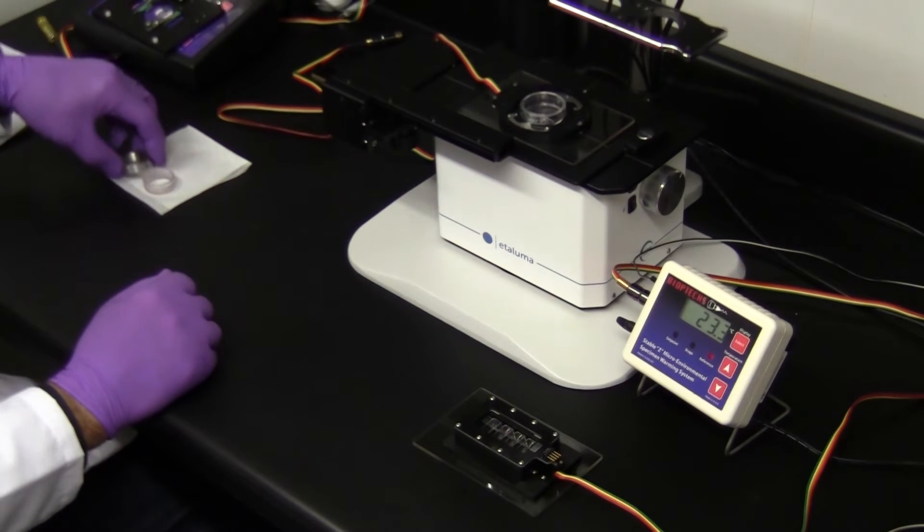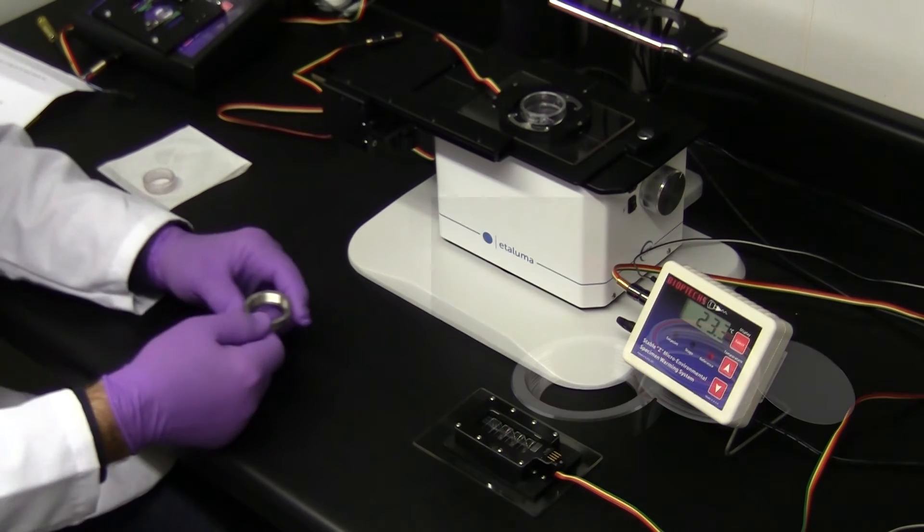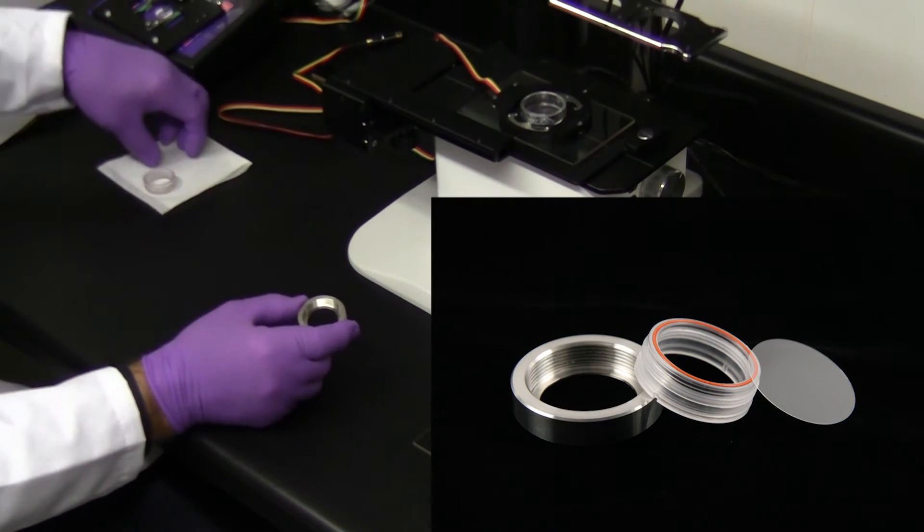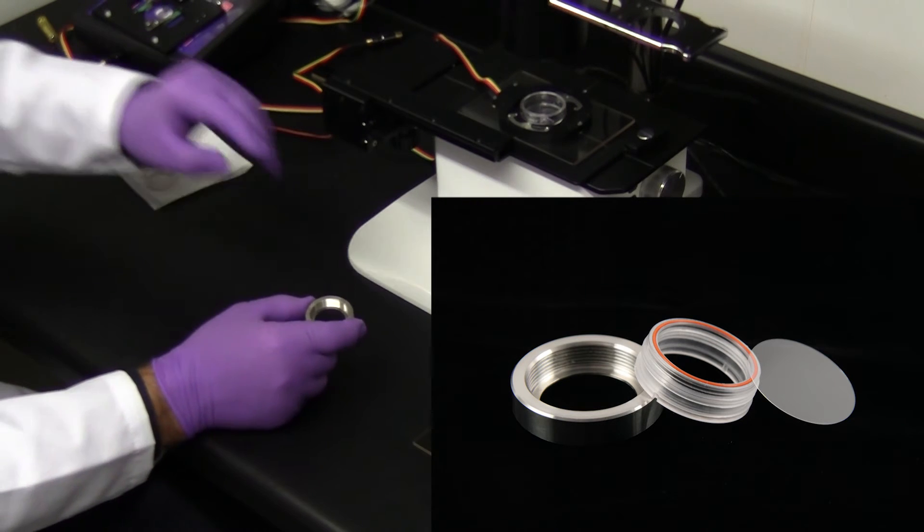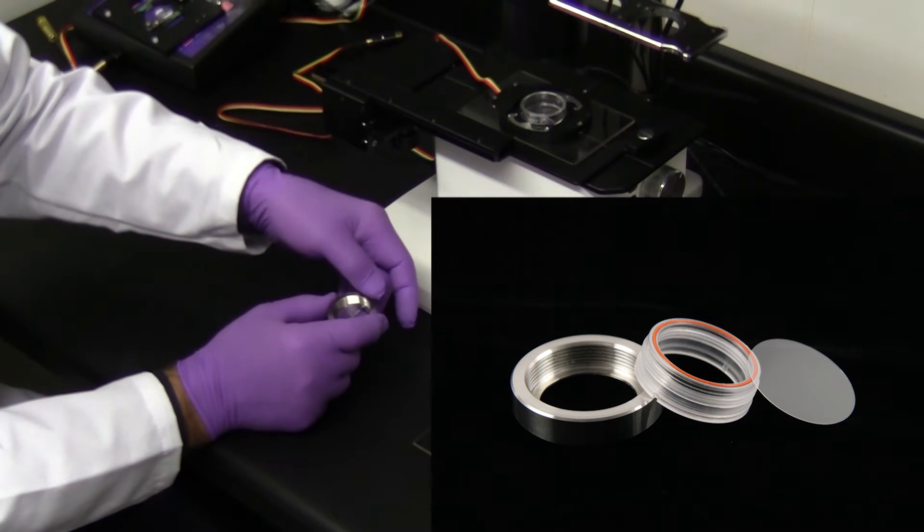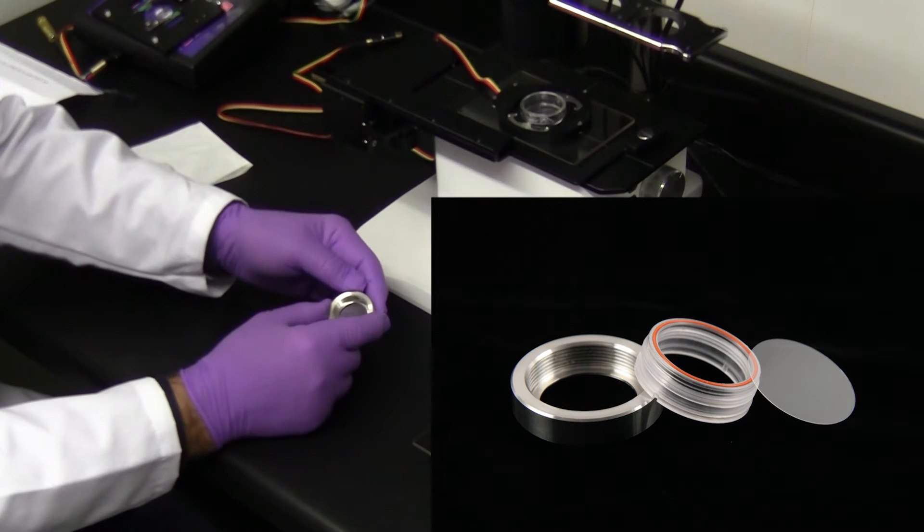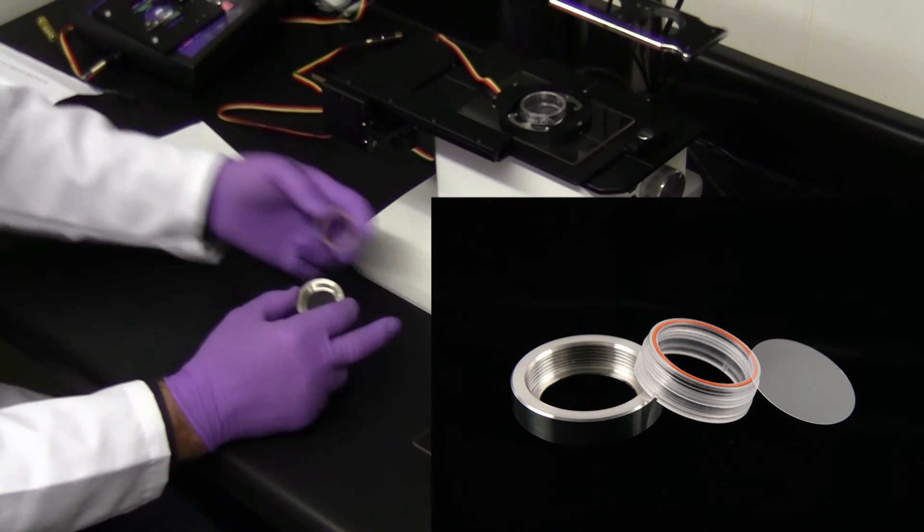For customers that want to save on cover glass bottom dishes, we offer an interchangeable coverslip dish. It is made of a stainless steel threaded outer ring that holds a 30mm diameter number 1.5 coverslip and has a 25mm viewable aperture.